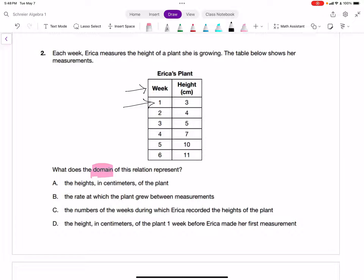Let's look through our answer choices. The first one is the heights in centimeters of the plant. That's not right. The rate, that's not right. The number of weeks during which Erica recorded the heights of the plant. That one seems like the right one. Let's go ahead and make C our answer choice for number two.